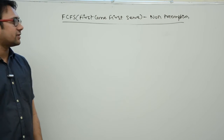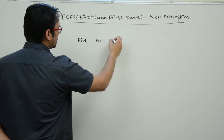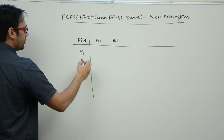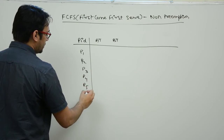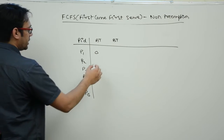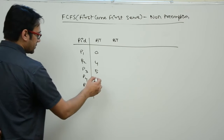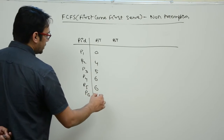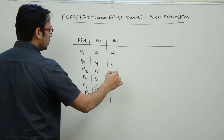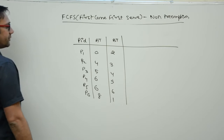Let us take one more example of the first-come-first-serve algorithm. Assume the process IDs are p1, p2, p3, p4, p5, and p6. Process p1 arrived at time 0, p2 at time 4, p3 at time 5, p4 at time 6, p5 at time 6, and p6 at time 8. The burst times of these processes are 2, 3, 4, 5, 6, and 1 respectively.